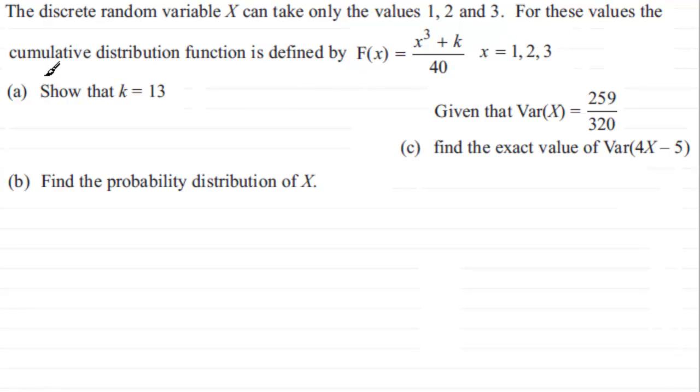And in Part A we've got to show that k equals 13, and in Part B find the probability distribution of X. And then finally in Part C, given that the variance of X equals 259 over 320, we've got to find the exact value of the variance of 4X minus 5.